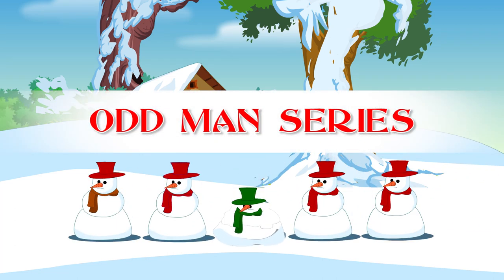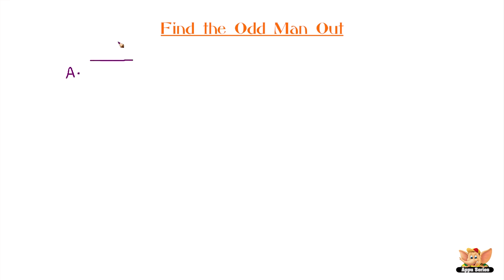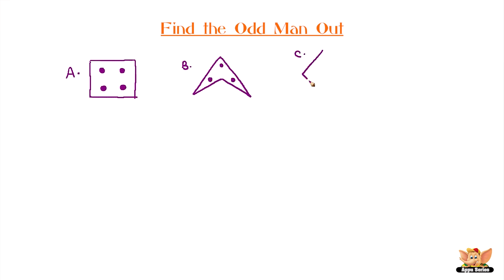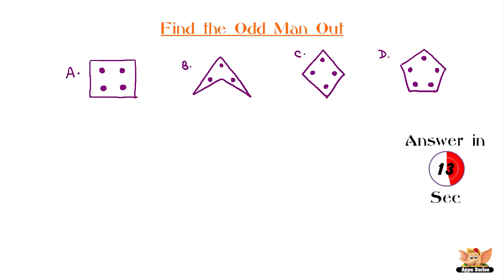Odd man series. In this odd man series we have four different shapes: a square, an arrowhead, a diamond, and a pentagon. One of these figures is the odd man out. Can you identify which figure it is? Your time starts now. This looks pretty simple, huh?